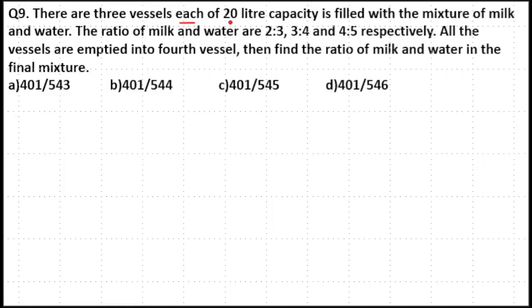There are three vessels each of 20 liter capacity filled with the mixture of milk and water. The ratio of milk and water are 2 is to 3, 3 is to 4, and 4 is to 5 respectively. All the three vessels are emptied into a fourth vessel. Find the ratio of milk and water in the final mixture.